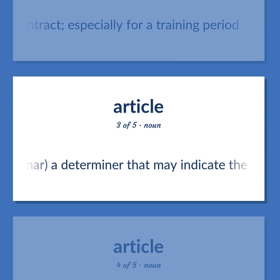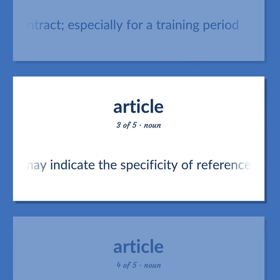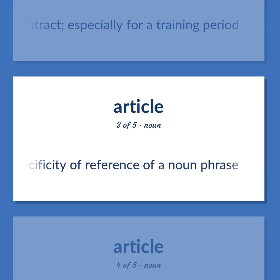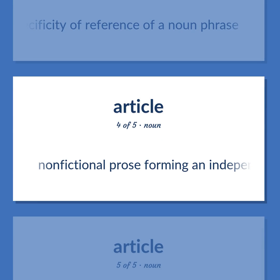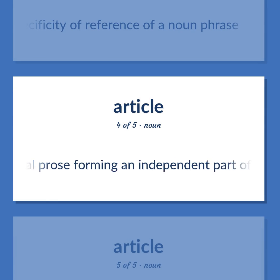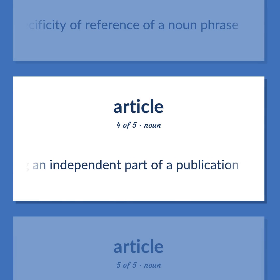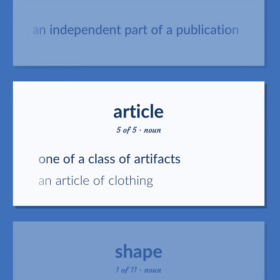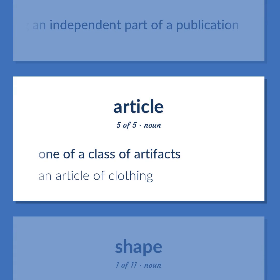Article: A determiner that may indicate the specificity of reference of a noun phrase (grammar). Non-fictional prose forming an independent part of a publication. One of a class of artifacts. An article of clothing.